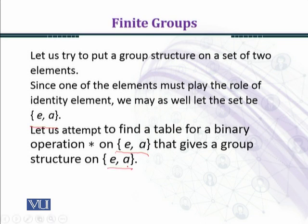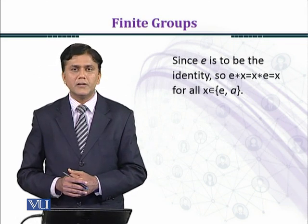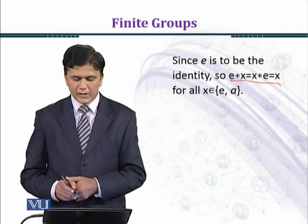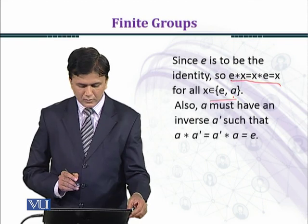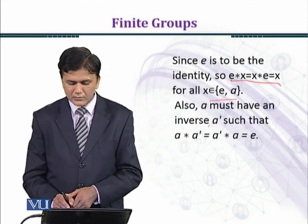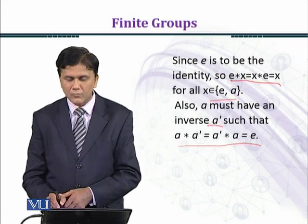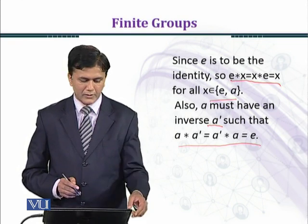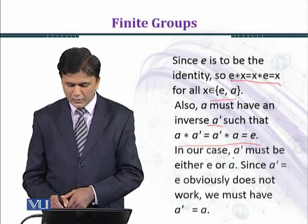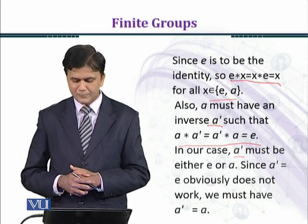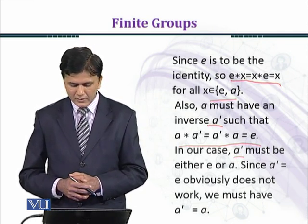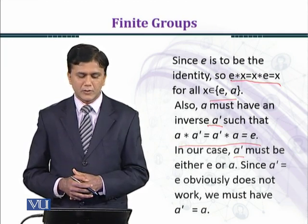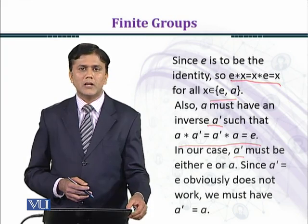Let us attempt to find a table for a binary operation star on {E, A} that gives a group structure. Since E is to be the identity, E star X equal to X star E equal to X — the identity law is satisfied for every X belonging to {E, A}. Also, A must have an inverse A prime such that A star A prime equal to A prime star A equal to the identity element. In our case, A prime must be either E or A, and you can easily see that A prime cannot be equal to E, so we take A prime equal to A. This gives us the following table.